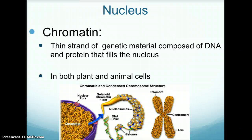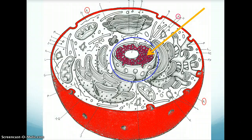Chromatin is an organelle in plant and animal cells. Chromatin is a thin strand of genetic material composed of DNA and protein that fills the nucleus. In this animal cell, the chromatin is colored in pink.